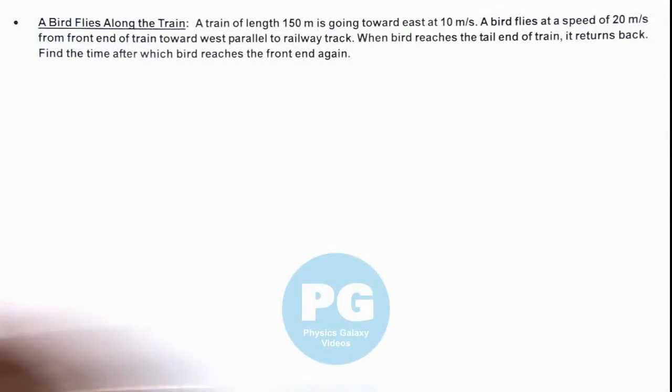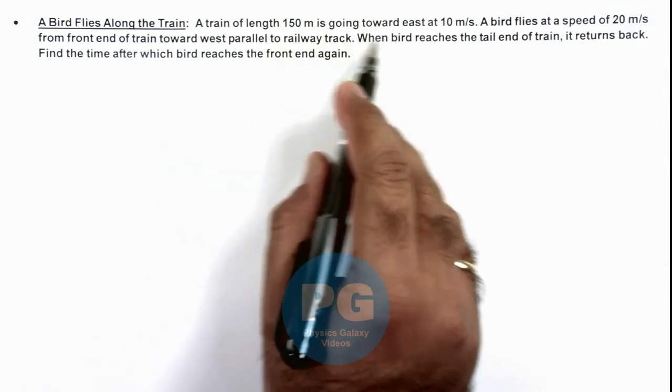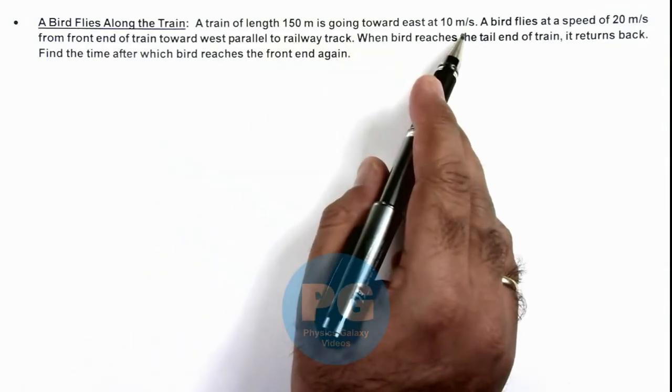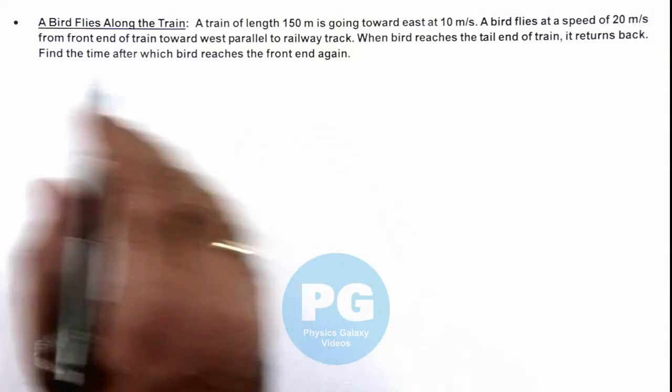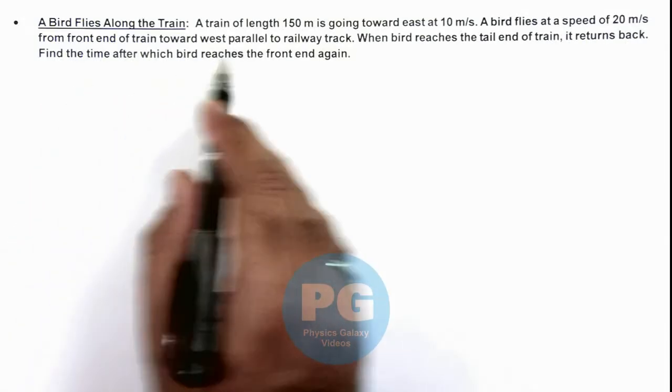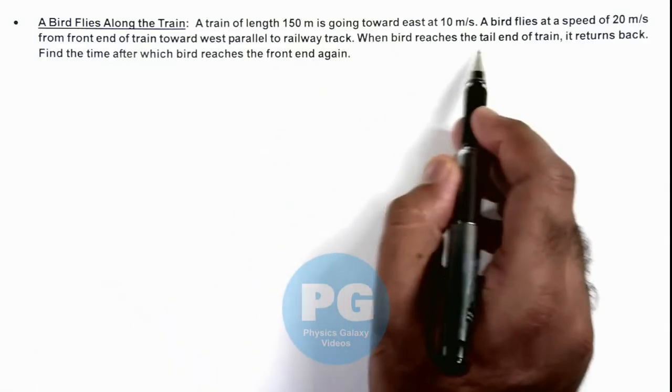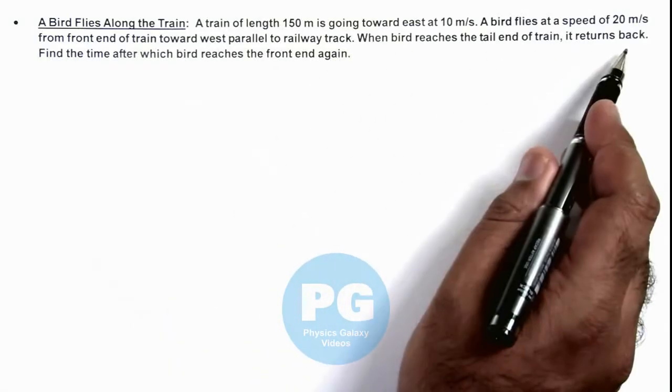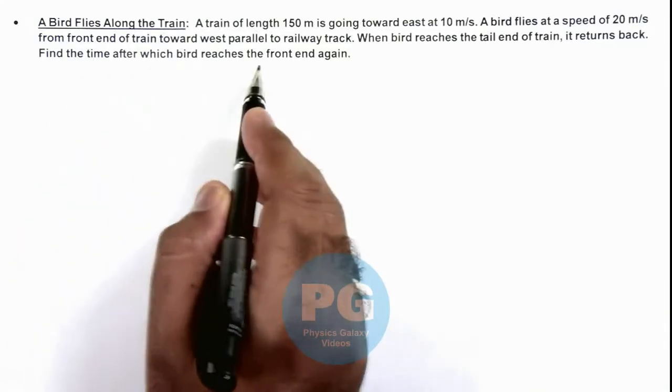This illustration describes a situation when a bird flies along a train. We are given that a train of length 150 meters is going toward east at 10 meters per second. A bird flies at a speed of 20 meters per second from the front end of the train toward west, parallel to the railway track. When the bird reaches the tail end of the train, it returns back. We are required to find the time after which the bird reaches the front end again.